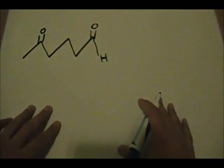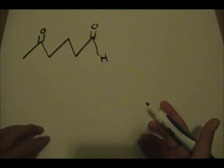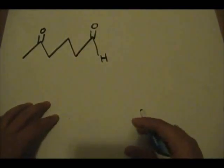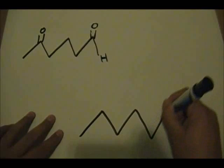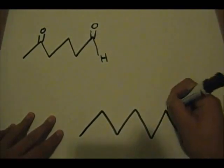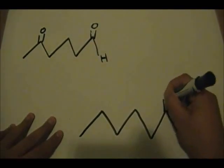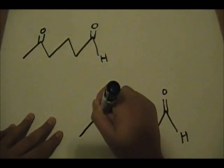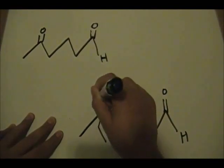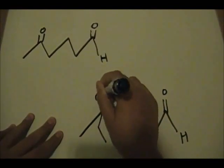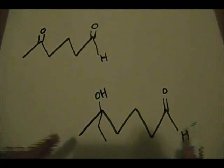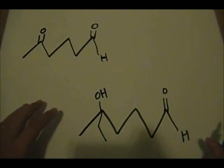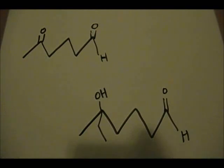Both the ketone and aldehyde will be reduced to their respective alcohols. So this is the product we're trying to form — we want only the ketone reduced to an alcohol while keeping the aldehyde unchanged. Keep that target product in mind.